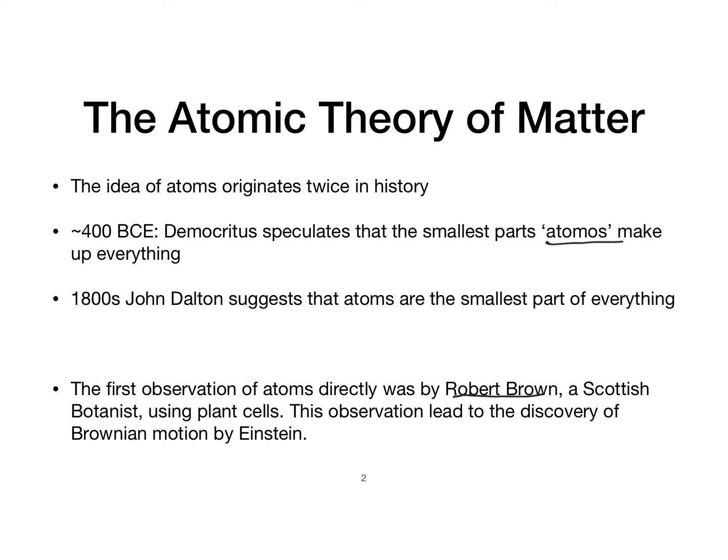In his work, he observed that different plant cells wiggled around under a microscope. Throughout time, they realized that this motion is due to small amounts of thermal energy, and Einstein described this as Brownian motion. These are really the first observations of atoms.